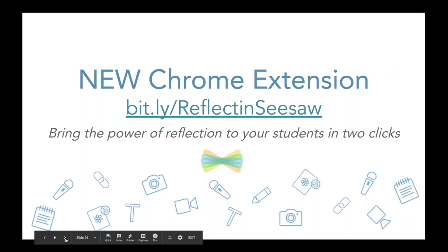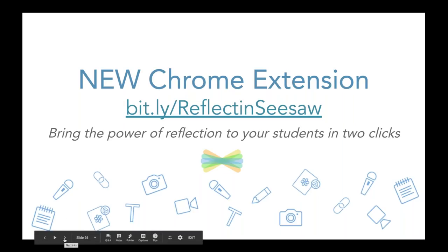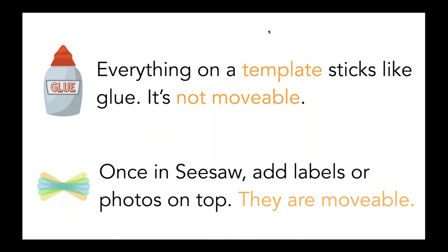You can capture the entire screen, or snap a portion of the screen, and it makes it super simple because it goes right into Seesaw. One important thing when creating a template: everything that you create on that template sticks like glue — it is not moving. Imagine you created an amazing Google slide with all these movable parts on it. The moment you download it as a JPEG, nothing is moving on it. It is static — you have basically just laminated that.